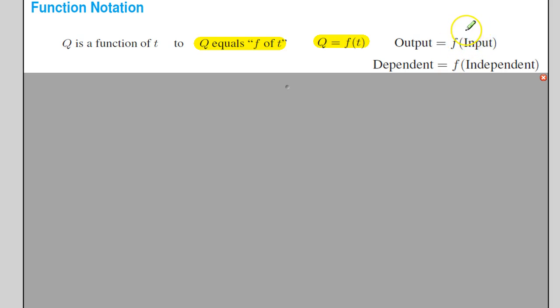Basically, that means when I put into the function f, the input, which is t in this case, then I'm going to get the output, which is q in this case.